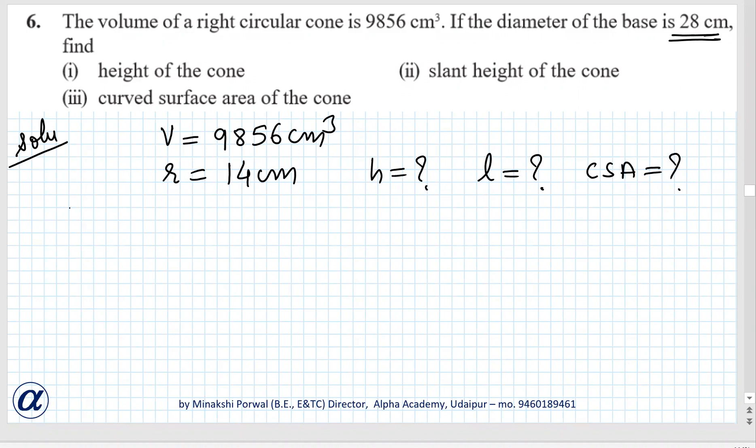So first, volume of cone is 1/3 π r² h. So 9856 equals 1/3 into 22/7 into 14 into 14 into h.